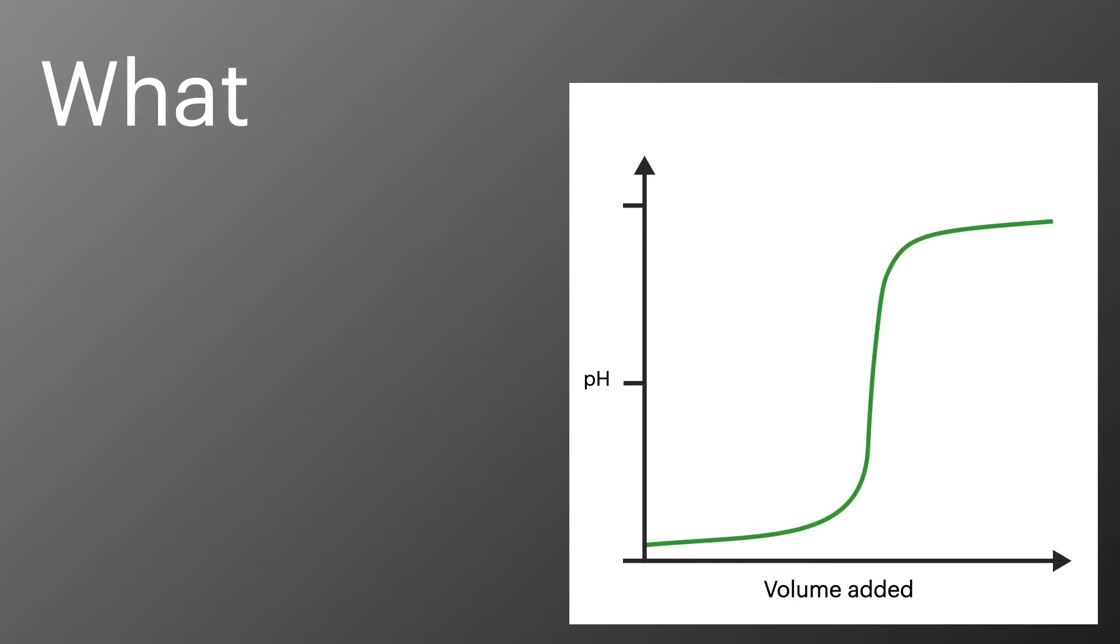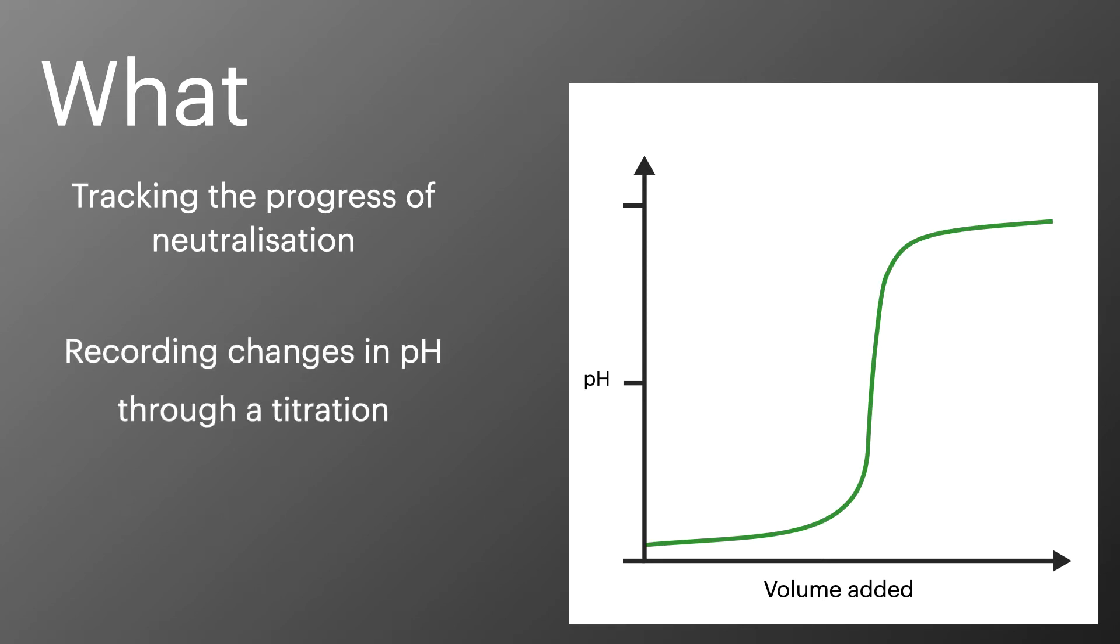So this is a pH curve. It's created when we track the progress of a neutralization reaction, much like we'd carry out when we do a titration. We continually record the pH of the solution as we add in the acid or the base during the titration and then we plot a graph of the data.